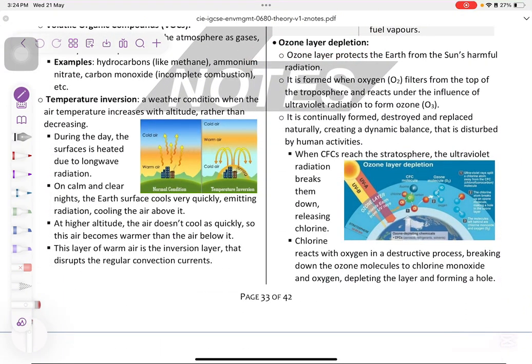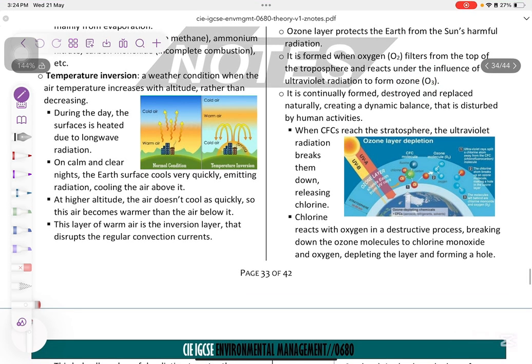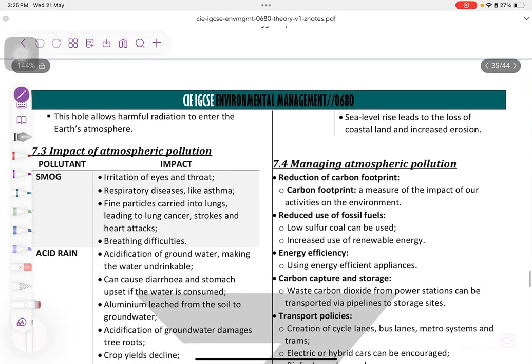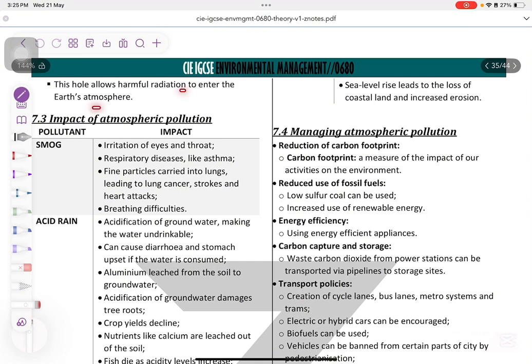Ozone layer depletion: we roughly spoke about this by saying that CFCs contribute in this. Ozone layer protects the earth from sun's harmful radiation formed when oxygen filters from the top of the troposphere and reacts under the influence of ultraviolet radiation to form ozone, which is O3. It's continually formed, destroyed and replaced naturally, creating a dynamic balance that is distributed by human activities. When CFCs reach the stratosphere, the ultraviolet radiation breaks them down, releasing chlorine. Chlorine reacts with oxygen in a destructive process, breaking down the ozone molecules to chlorine monoxide and oxygen, depleting the layer and forming a hole in it. This hole allows harmful radiation to enter the earth's atmosphere.